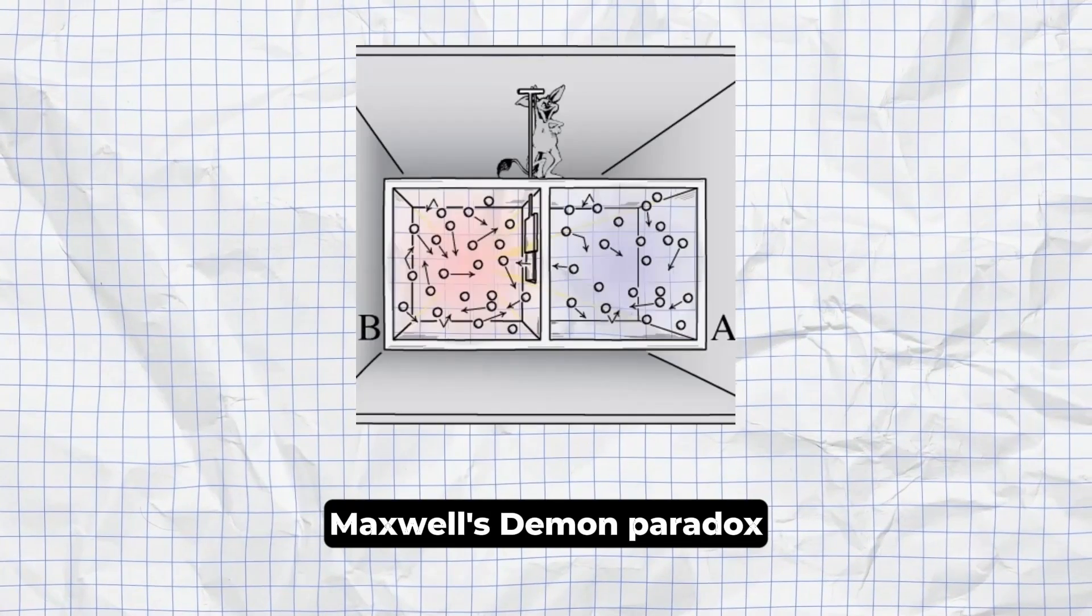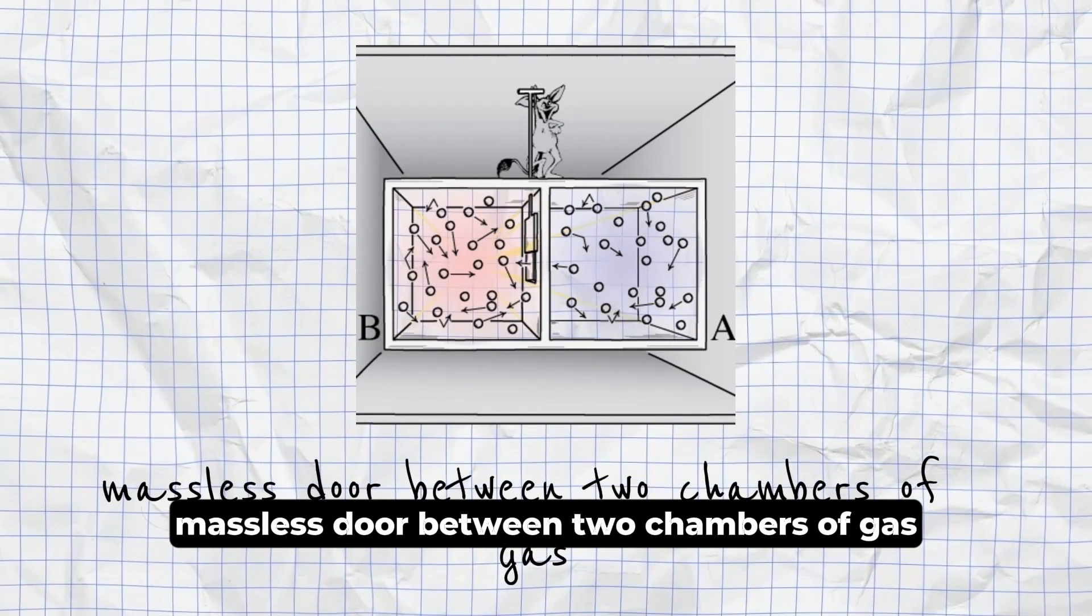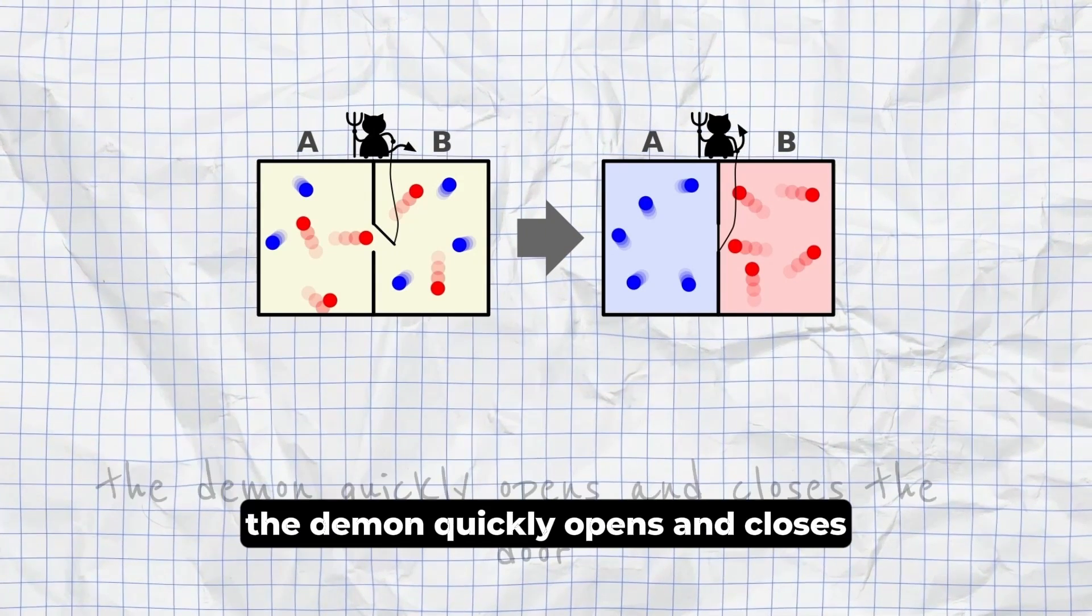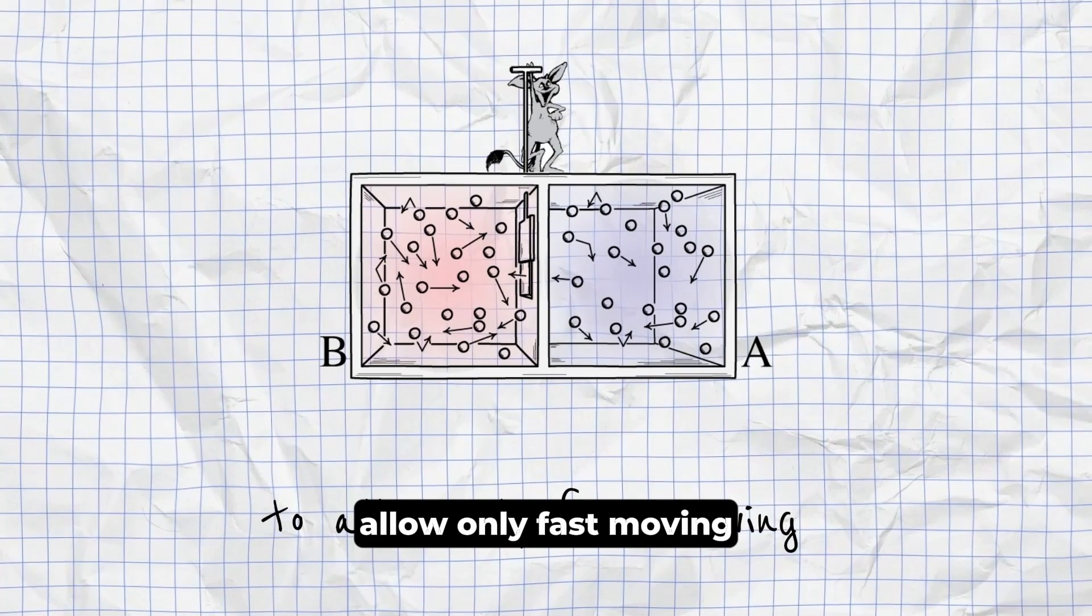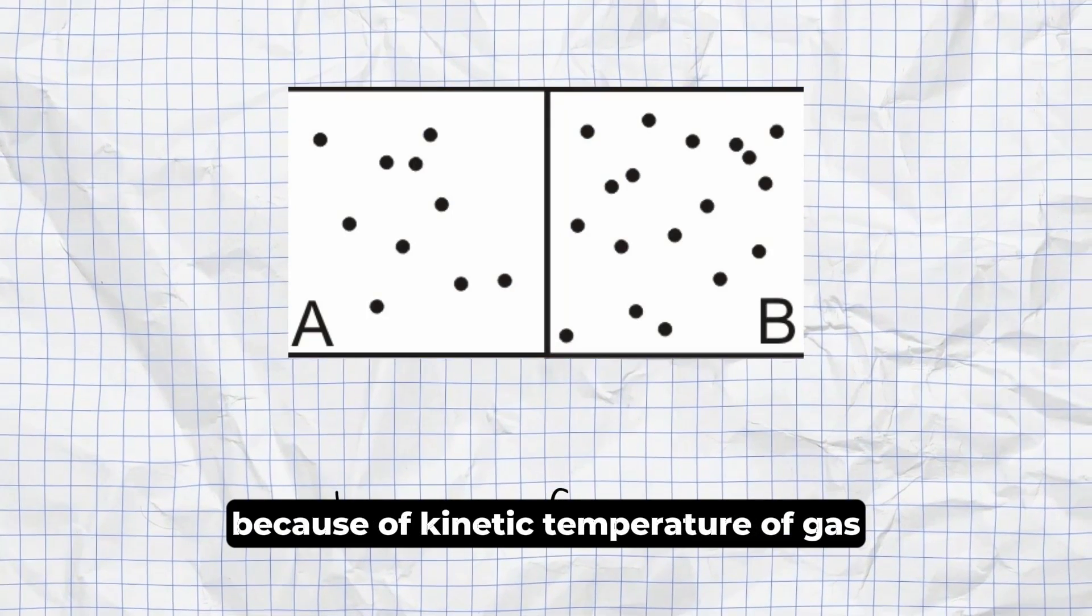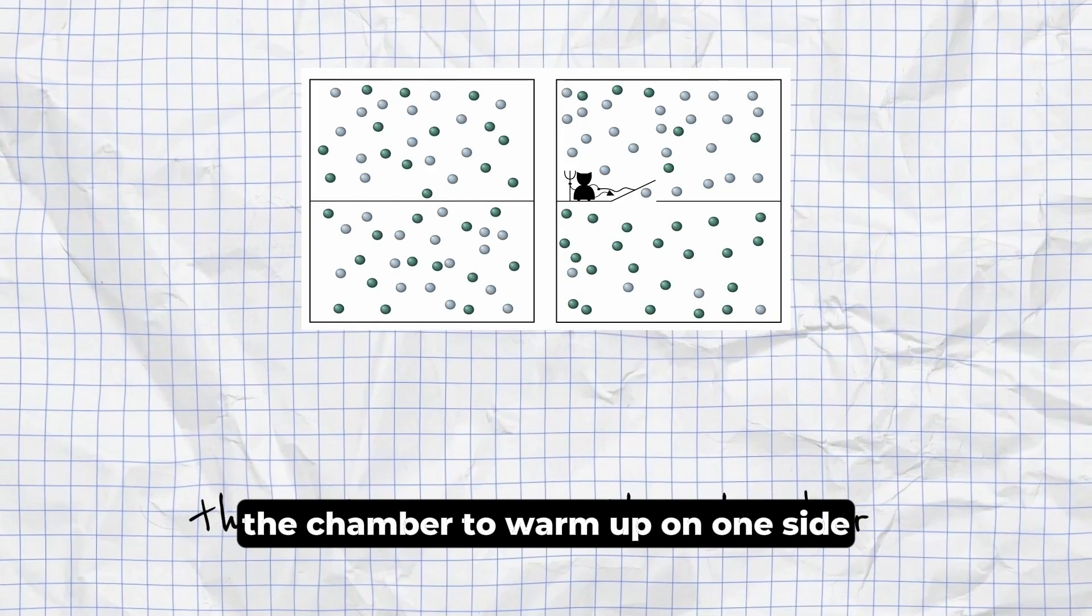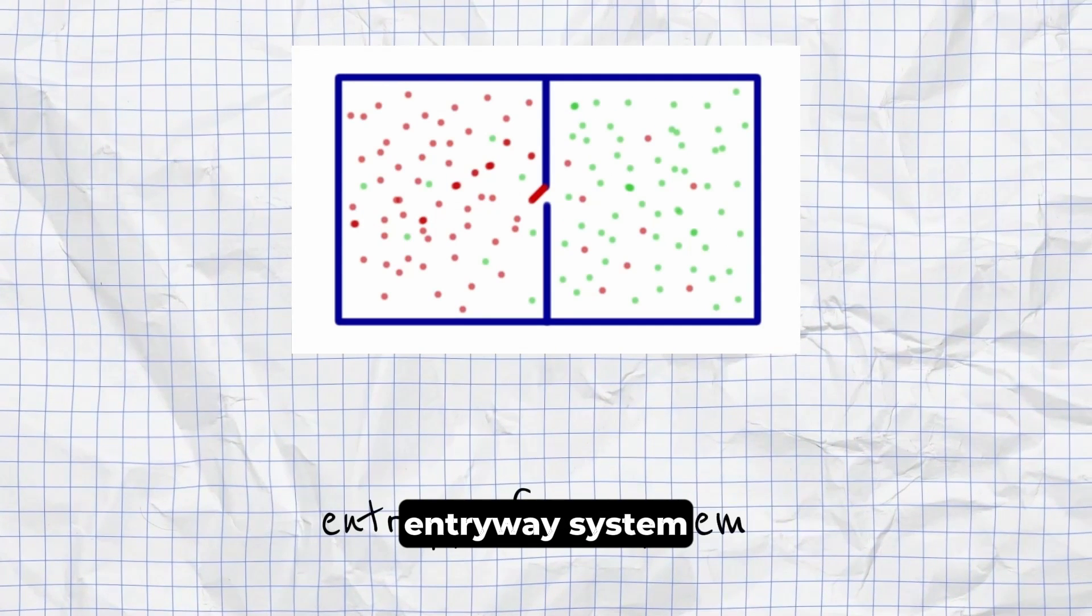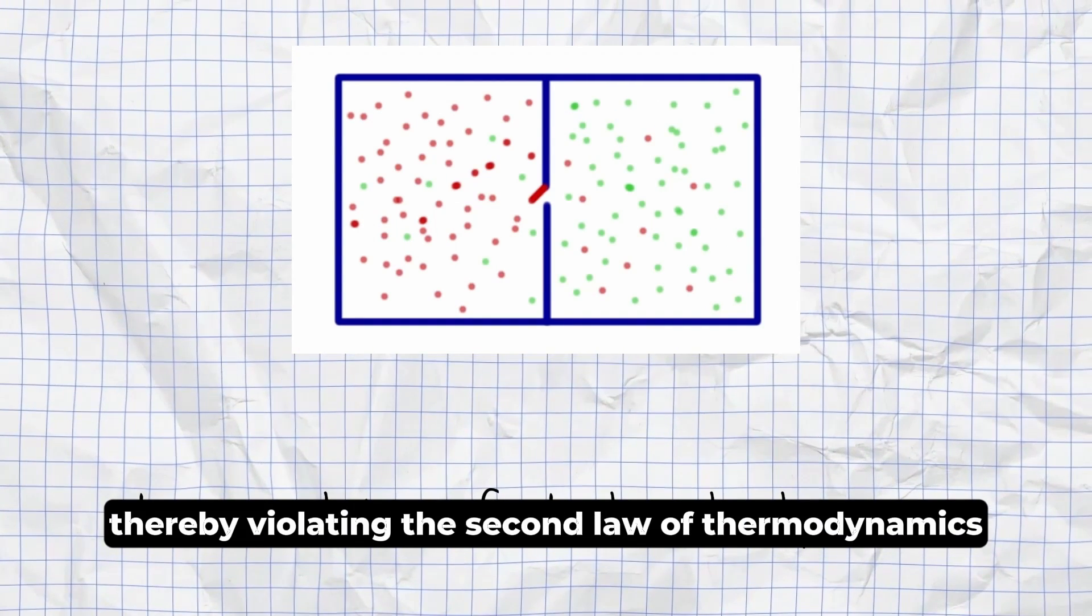Maxwell's Demon Paradox. In the thought experiment, a demon controls a small, massless door between two chambers of gas. As individual gas molecules or atoms approach the door, the demon quickly opens and closes the door to allow only fast moving to pass through one direction and only slow moving to the other direction. Because the kinetic temperature of gas depends on its velocity, the action causes the chamber to warm up on one side and cool down on the other. This would decrease the total entropy of a system without applying work, thereby violating the second law of thermodynamics.